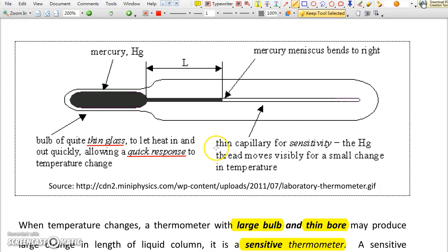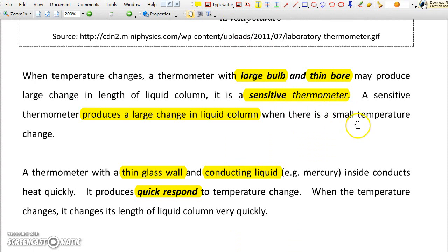For the narrow tube or capillary, it should be thin so to improve sensitivity. As a smaller temperature change may produce a larger change in liquid column if the capillary is thinner. So a thermometer has a larger bulb and thinner bore may produce a larger change in the length of liquid column and so it becomes a sensitive thermometer.